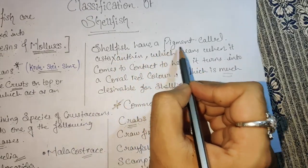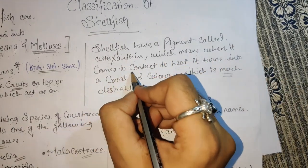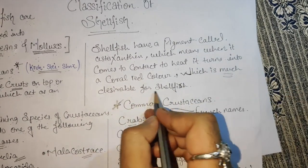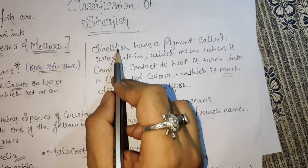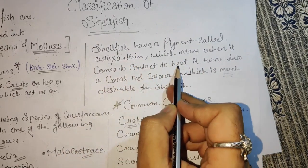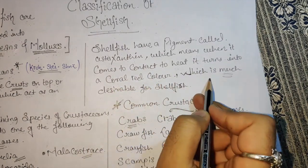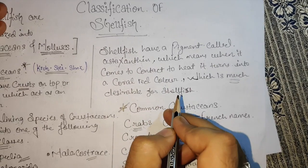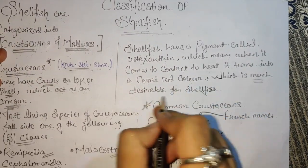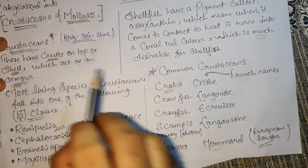Shellfish have a pigment called astaxanthin. When it comes into contact with heat, it turns into a coral red color, which is the desirable color for shellfish. So when exposed to heat, shellfish will turn that coral red color.